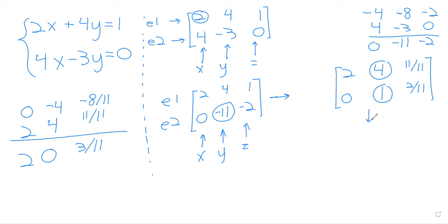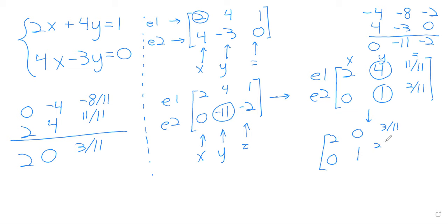Every step along the way, the rows continue to represent equations and the columns continue to represent variables, except for the last column which represents equality. You can shout out if you think I'm making some algebraic mistake at any point — I hope I'm not.